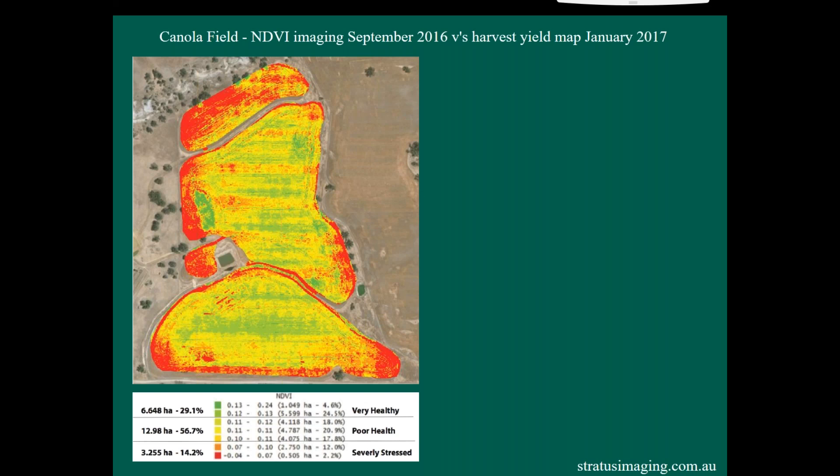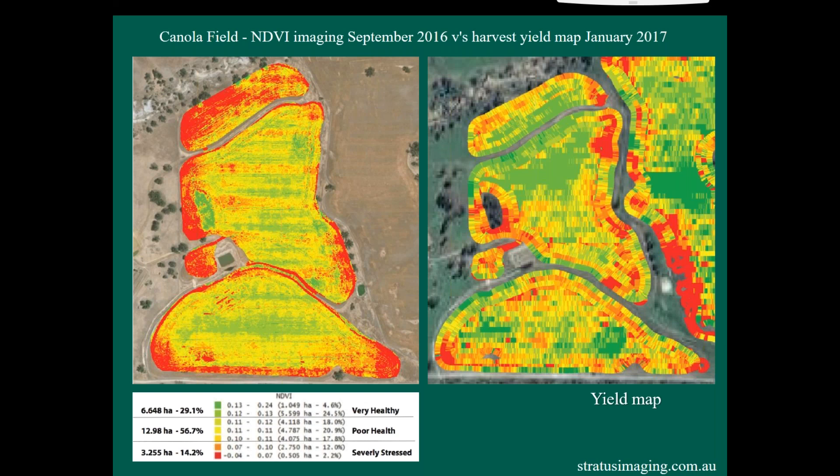So the green is very healthy, and you can see there's some edge stresses going on there as well. And it was interesting that they compared this to a yield map, and a lot of that, I don't know if corrective action was taken here or not, but a lot of that sort of correlates visually. You can see what's going on there.